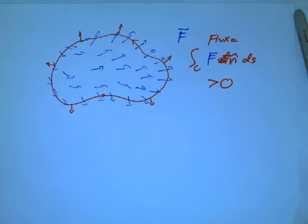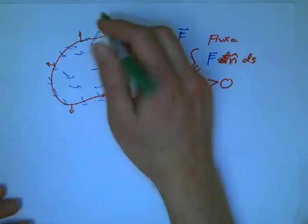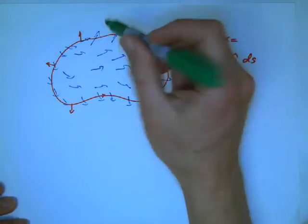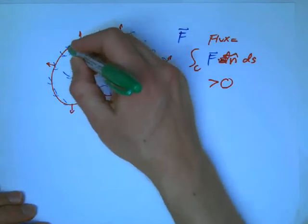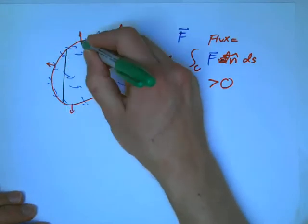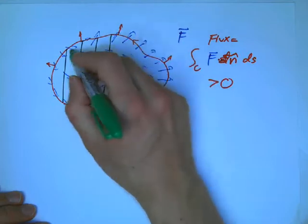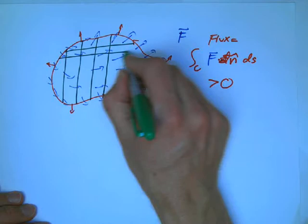Now, let's think about the proof of Green's theorem that we had, which was to take this, take the region inside and split it up into a bunch of pieces. We're going to take this region, split it up into a bunch of little pieces, little rectangles.